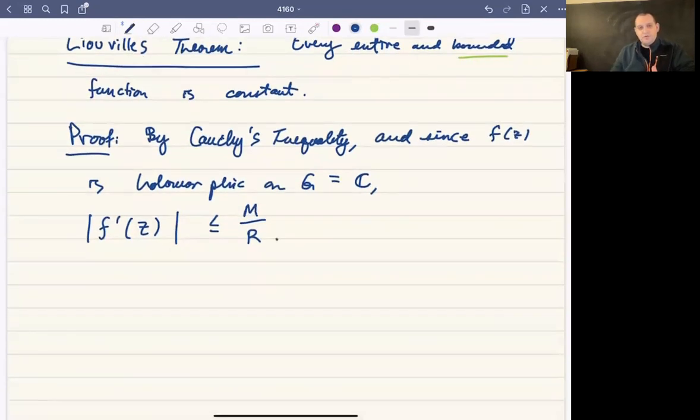And this is the proof. This is really all we need. If you think about what this says, this forces the derivative to be zero, because the left side is independent of R. So we can make R be whatever we want. And if R is sufficiently large, this quantity is as small as we want it to be. And it's like saying that something is less than epsilon for all epsilon. Well, the only way that that can work is if it's zero.